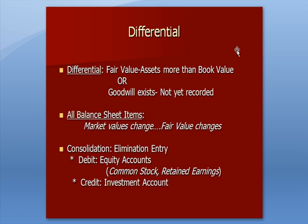In consolidation, we need to eliminate the activity between the parent and the subsidiary. To recognize the purchase of the subsidiary, we take the subsidiary's equity off the books by debiting equity accounts — debiting common stock and retained earnings to reduce them, and crediting the investment account to reduce that. In consolidation, we look at the two companies as if they're together.